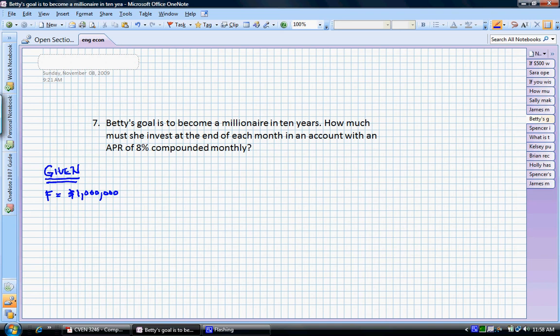And we also know that the number of periods here is 10 years, which is equal to 120 months. And she has an interest rate of 8%, and that is compounded monthly. So 8 over 12 is the value that we need to use here.